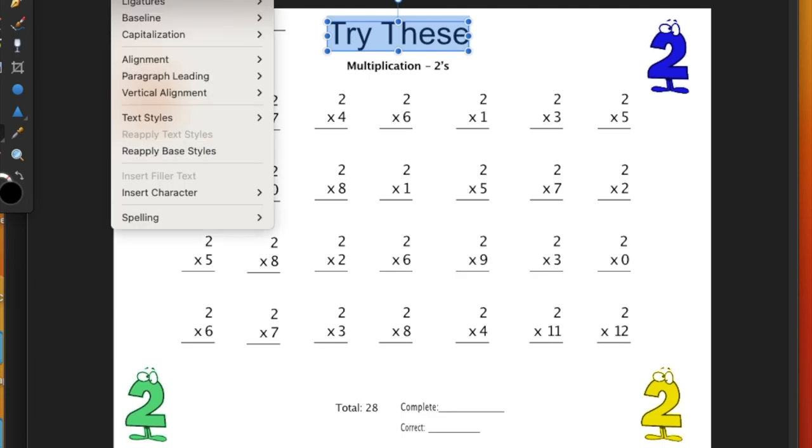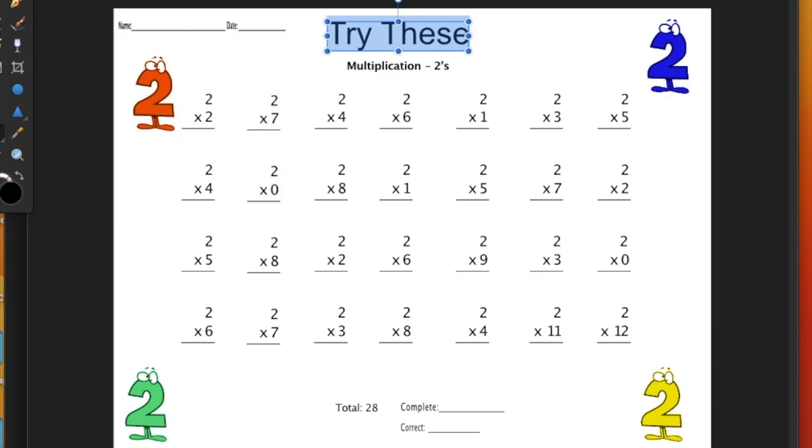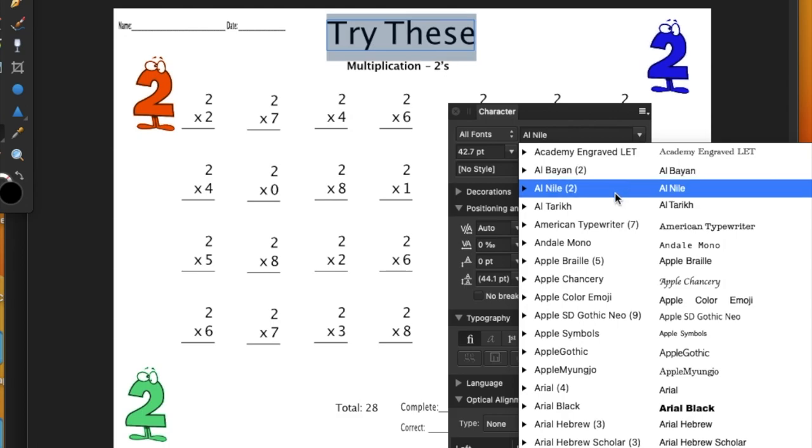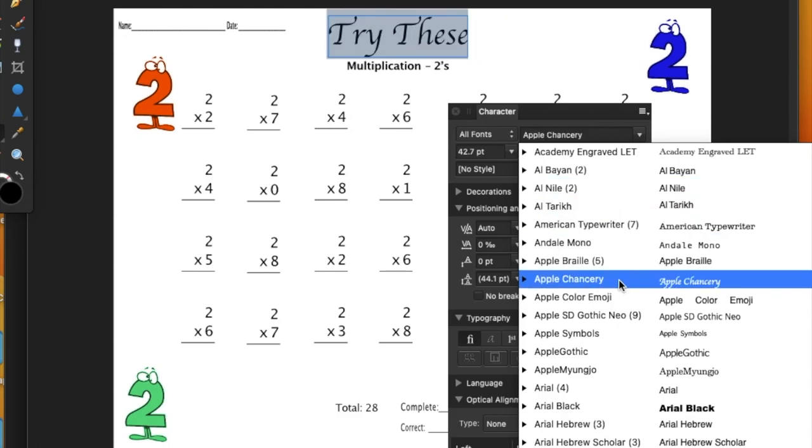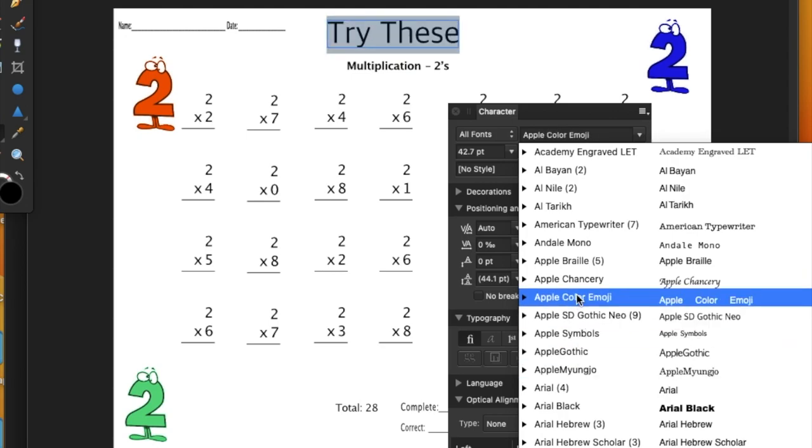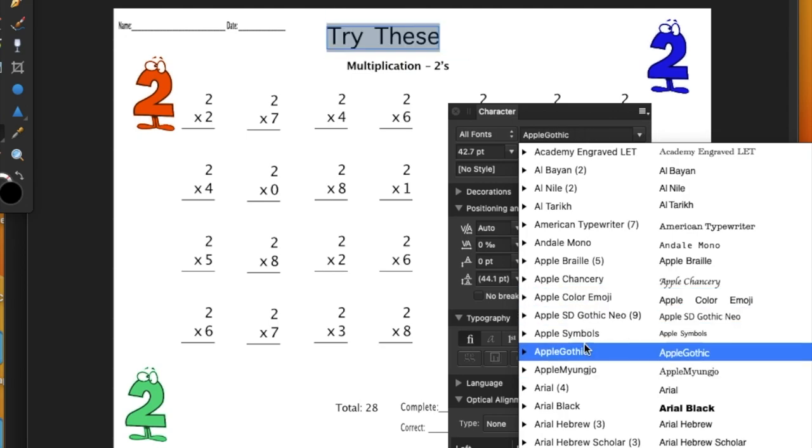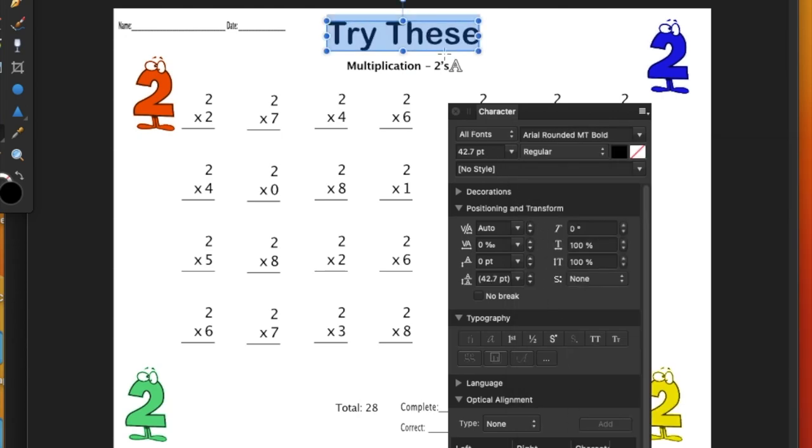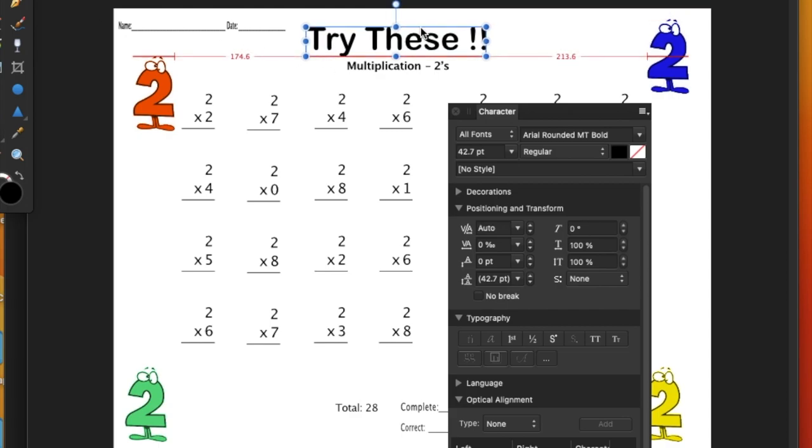You can see how easy that is to do in Affinity Designer. I'll drag the character box over. You can see the font changing as I move through. There's that fancy one, that cool one—up to you. There's 100 or 200 fonts, and you could add more fonts to the program. There's a lot of flexibility here.